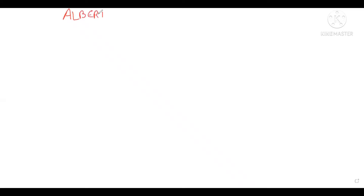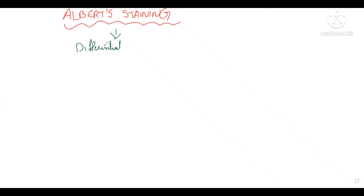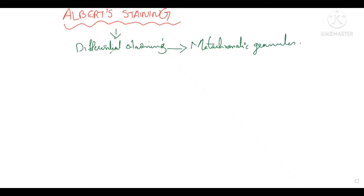Albert's staining is a type of differential staining, like gram staining and acid-fast staining. It is used to observe special structures like metachromatic granules, which are present in certain bacteria.